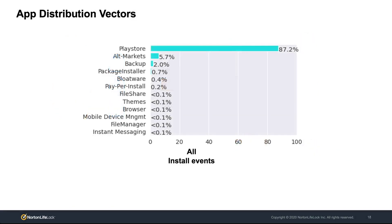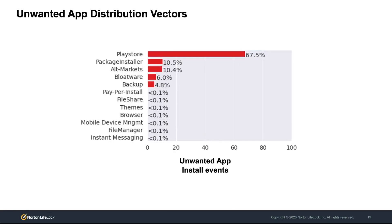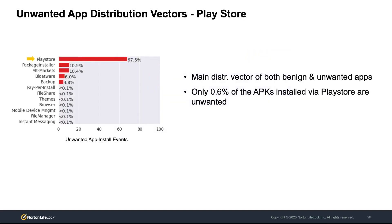Among those 12 vectors, we also see the package installer, which represents installations for which the Android API reports as the parent the package installer — meaning we do not know the exact parent application for those installations. Looking at how each vector contributes to unwanted app distribution, we immediately see that the Play Store is the main distribution vector for both benign and unwanted app installations. However, only 0.6% of the APKs installed via Play Store are actually unwanted. This means that Google's defenses work, but still, a small fraction of apps that evade those defenses, due to the market's popularity, results in a large number of installations, highlighting the need for further research on protecting the Play Store.